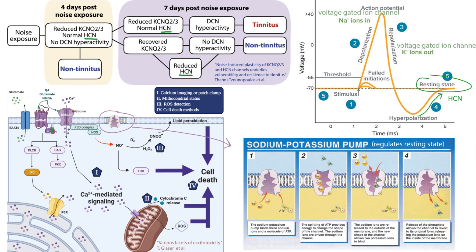Depolarization is the process when the membrane potential becomes more positive. Repolarization is when it becomes more negative. And hyperpolarization is this little dip right here when the neuron slowly recovers its resting state and prepares itself to fire the next action potential. There's also a refractory period — right around here — when the action potential cannot be fired again. Keep all of this in mind as we move on throughout this video.